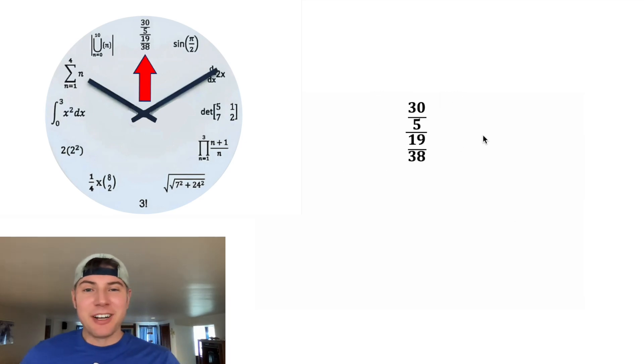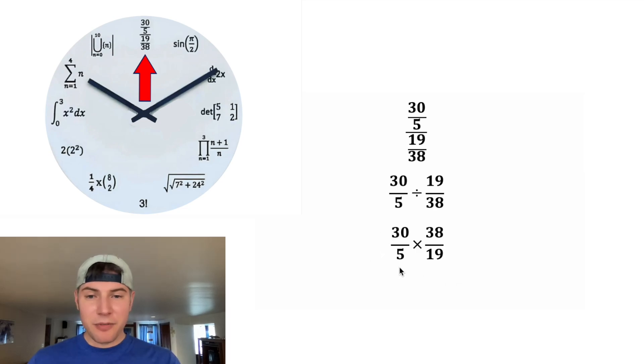And last, we have this one right here. This means that this fraction divided by this fraction. A nice way to divide fractions is to keep the first fraction, change the divide to a multiply, and flip the second fraction. Now we can simplify the fractions. 30 divided by 5 is 6, and 38 divided by 19 is 2, and 6 times 2 is equal to 12. And that's why this is at the 12 o'clock hour. How exciting.